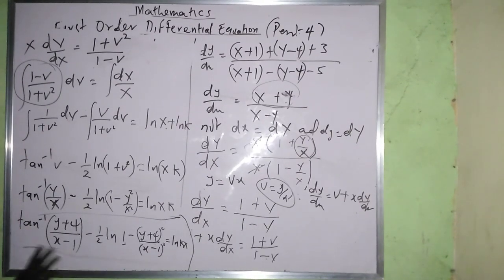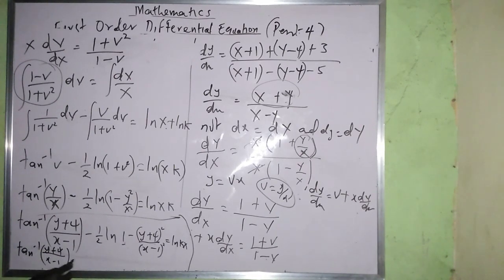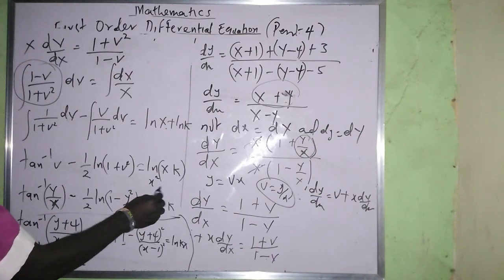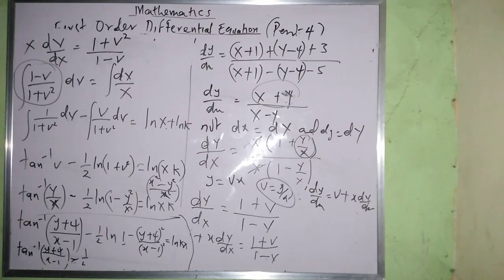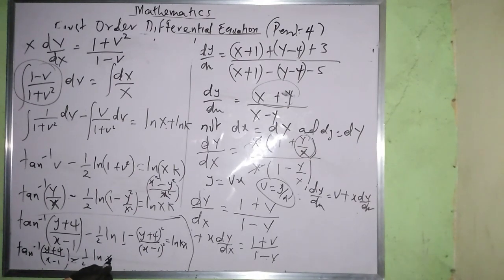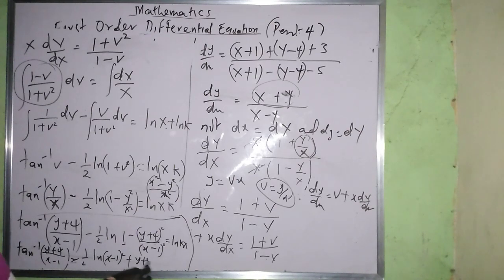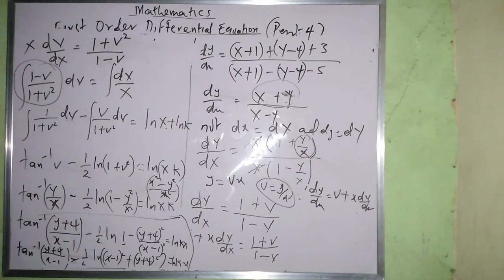Applying logarithm laws to simplify further: tan⁻¹((y + 4)/(x − 1)) − (1/2) times ln[(x − 1)² + (y + 4)²] equals ln k. The final answer can be written as (x − 1)² + (y + 4)² expressed with the arctangent term. That completes case one.